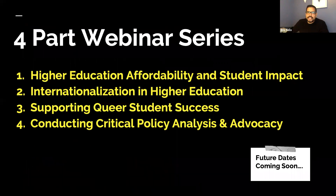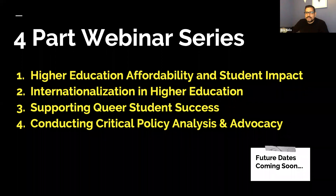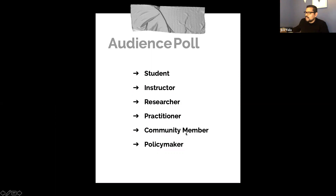The first one today is on higher education affordability and its impact on students. In a few weeks we'll focus on internationalization in higher education. In April we'll discuss topics around queer student success with research and practice, and the fourth one thus far that's planned is on critical policy analysis and advocacy in higher education. Before we move forward, we want to get a little bit of context in terms of who's here, so I'm opening up a poll for all of us to share who's in attendance.